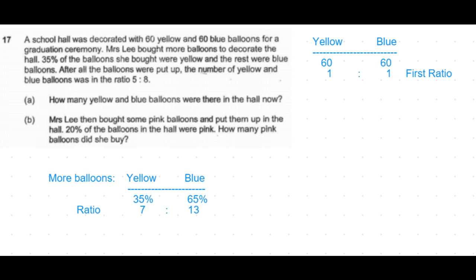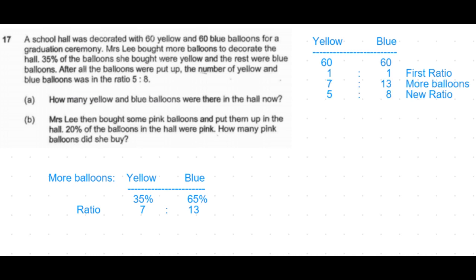So the more balloons that were added are in the ratio 7:13. After this, the new ratio of yellow to blue balloons is 5:8. Let's note down all the ratios: initial ratio is 1:1, more balloons added in the ratio 7:13, and the end ratio is 5:8.